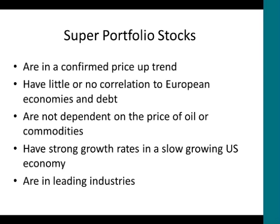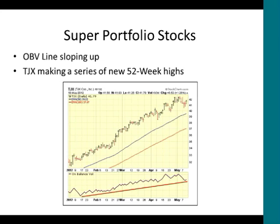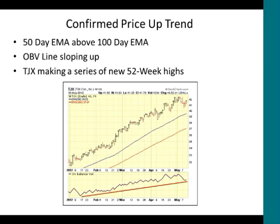I've been short that side of the market by selling these ETF calls against my super portfolio stocks. These super portfolio stocks have strong growth rates in a slow-growing U.S. economy and they're in a leading industry. Here's an example — TJX, the retailer — it's been doing well in this current environment, just reported good earnings. It's doing well despite the slow U.S. economy and overseas economies, especially in Europe, that are starting to go into a recession.